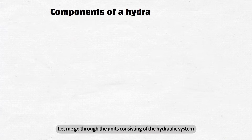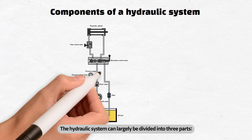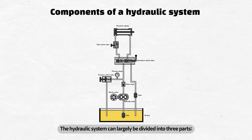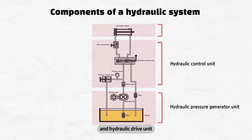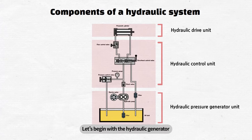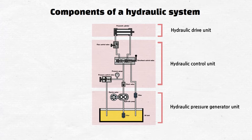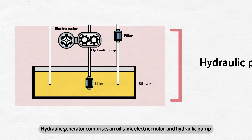Let me go through the units consisting of the hydraulic system. The hydraulic system can largely be divided into three parts: a hydraulic generator, hydraulic controller, and hydraulic drive unit. Let's begin with the hydraulic generator. The hydraulic generator comprises an oil tank, electric motor, and hydraulic pump.